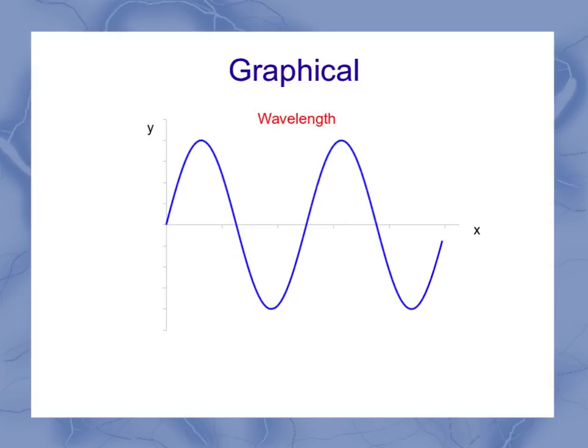Now another property I could measure off of these is what's called wavelength. And wavelength is the distance horizontally from peak to peak. So this is a measurement in x going from one peak to the other. How far apart are the peaks?